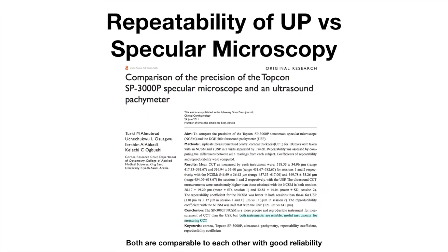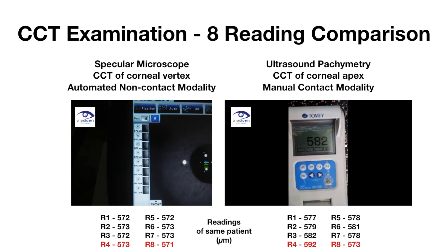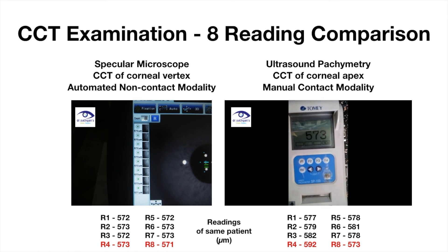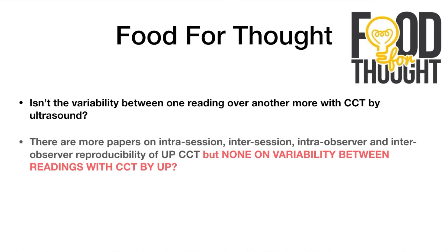The literature showed both ultrasound and specular are equally reliable. But when it came down to variability between consecutive readings, specular had more consistency than ultrasound, which showed a difference of approximately 20 micrometres between its highest and lowest reading. Isn't the variability between one reading over another more with CCT by ultrasound? Has this fallen in our blind spot?